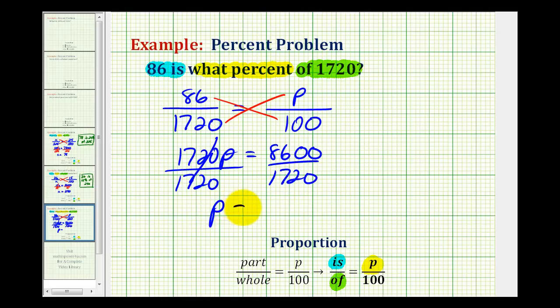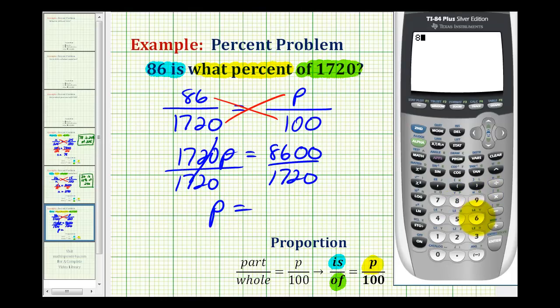So we'll have p equals this quotient, so we have 8,600 divided by 1720.